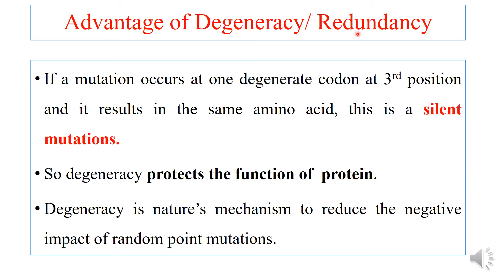The advantage of degeneracy or redundancy: if a mutation occurs at one degenerate codon at the third position and it results in the same amino acid, then it is a silent mutation. So degeneracy protects the function of the protein because although there is a change in the base at the third position of a codon, it does not result in a different amino acid. Degeneracy is nature's mechanism to reduce the negative impact of random mutations, especially point mutations.